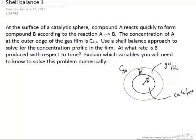In this problem we're going to do a shell balance to analyze the mass transfer to a catalyst sphere. What we're going to assume here is that the reaction rate at the surface of the sphere is very fast relative to diffusion.